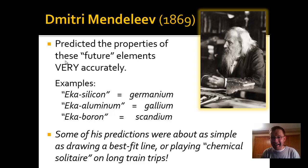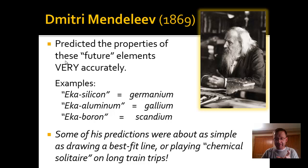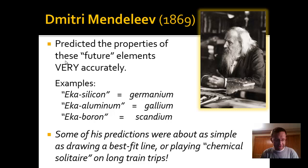Some of his predictions were like drawing a best-fit line: if densities are increasing gradually and elements are missing in between, the next elements to be found would have a density somewhere along that line. He was known to have cards with element properties on them, which he'd lay out on long train trips, moving them around trying to find patterns — ferociously working through this puzzle.